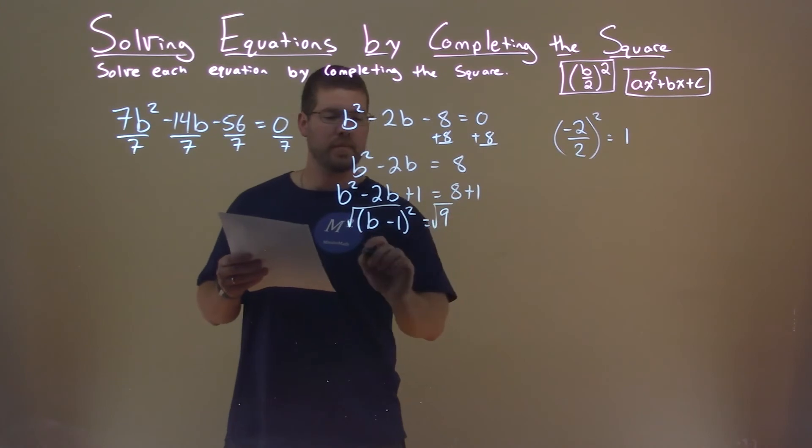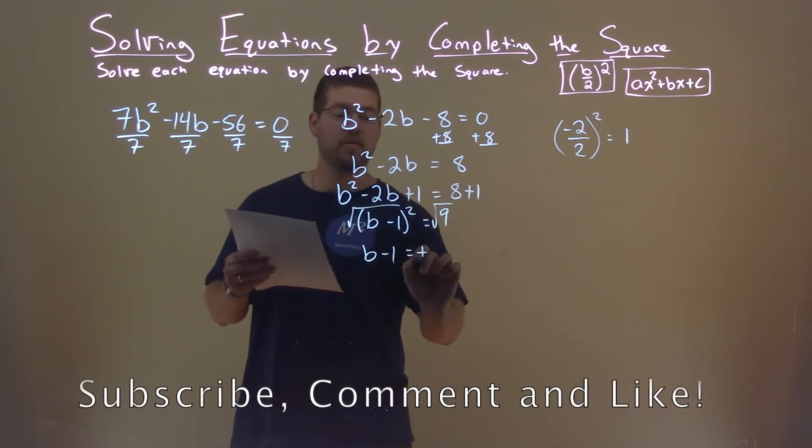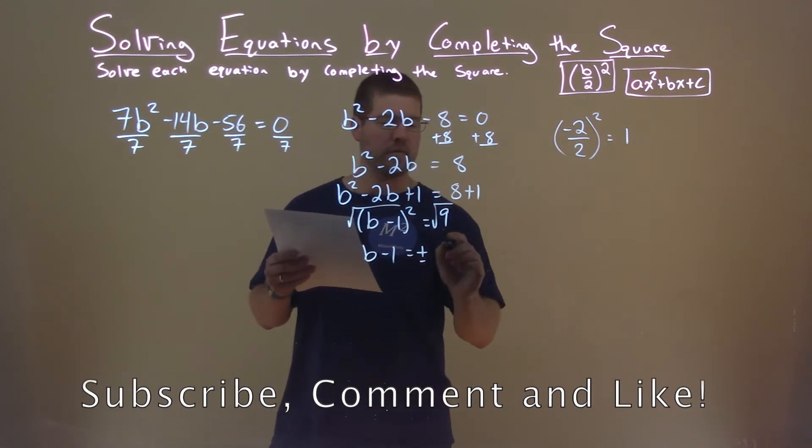Take the square root of both sides here, and we have b minus 1 equals plus or minus, don't forget it, square root of 9, which is 3.